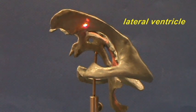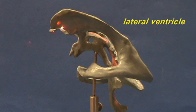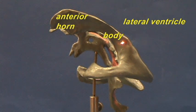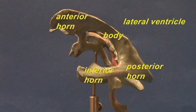The lateral ventricles are the largest ventricles. You can see one of the lateral ventricles right over here. This is the anterior horn of the lateral ventricle extending into the frontal lobe. The body is right over here. The posterior horn of the lateral ventricle extends into the occipital lobe, and here you have the inferior horn extending into the temporal lobe.